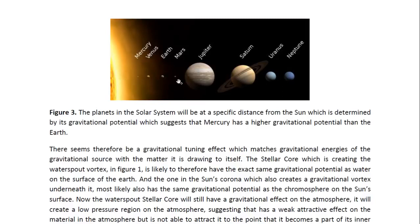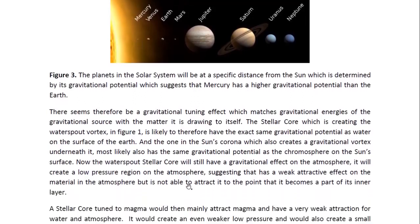Thus the largest stellar cores are likely to go to the Sun, and the smaller ones are likely to only be able to draw material from the planets in the solar system. So the planets are at the appropriate distance from the center of the Sun depending on their gravitational potential. Remember, gravitational potential is energy per unit mass. And Mercury would be the planet that has the highest gravitational potential because it is the innermost planet. So this seems to be a gravitational tuning effect, which matches gravitational energies of the gravitational source with the matter it is drawing to itself in the stellar cores.